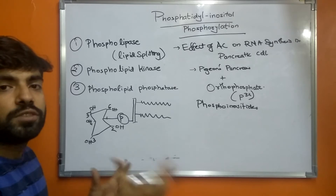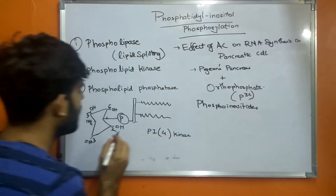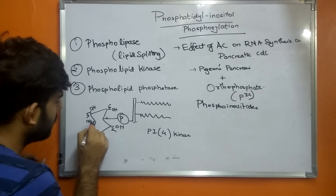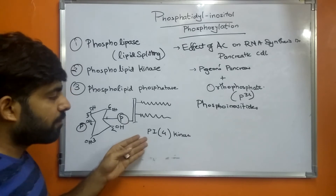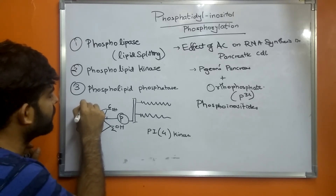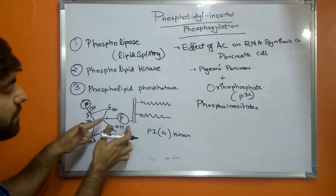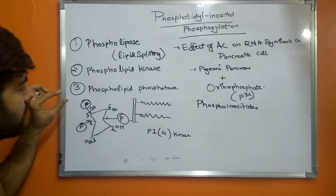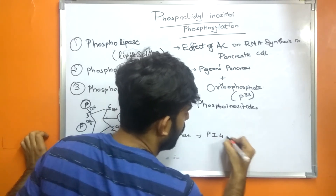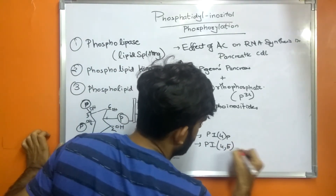The kinases that add a phosphate group to the inositol ring include PI4 kinase. Since there is a phosphate group present on the first carbon, the PI4 kinase will add a phosphate group to the fourth carbon. After further phosphorylation, there will also be a phosphate group at the fifth carbon — giving three phosphates: at the first, fourth, and fifth carbons. The compound formed is phosphoinositol 4-phosphate, and when this is further phosphorylated, phosphatidyl inositol 4,5-bisphosphate is formed.